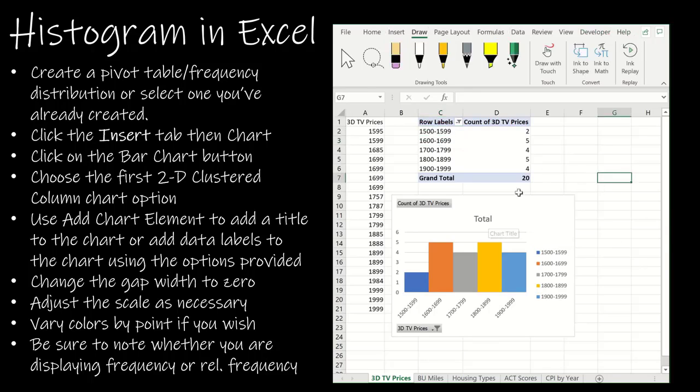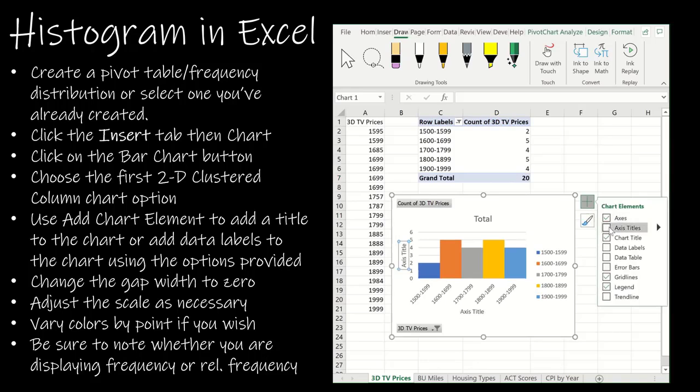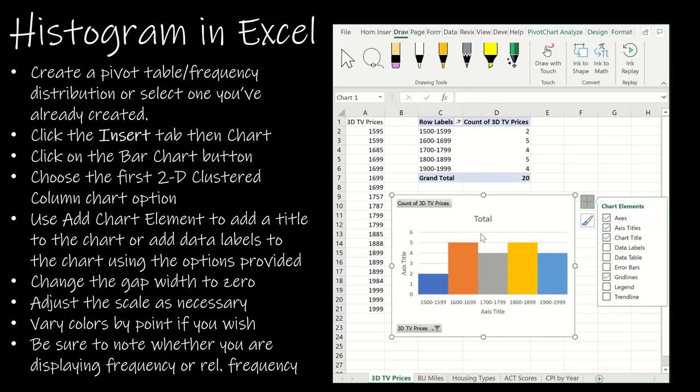You would change the title and you would go to that little plus and add the axis titles so that everything that is necessary was included. In this case, I probably wouldn't keep this legend because I have all of these values down here and it's just taking up a lot of room. And so change the title, change the axis title and change the axis title. And then you have everything you would need for your pivot table and histogram.